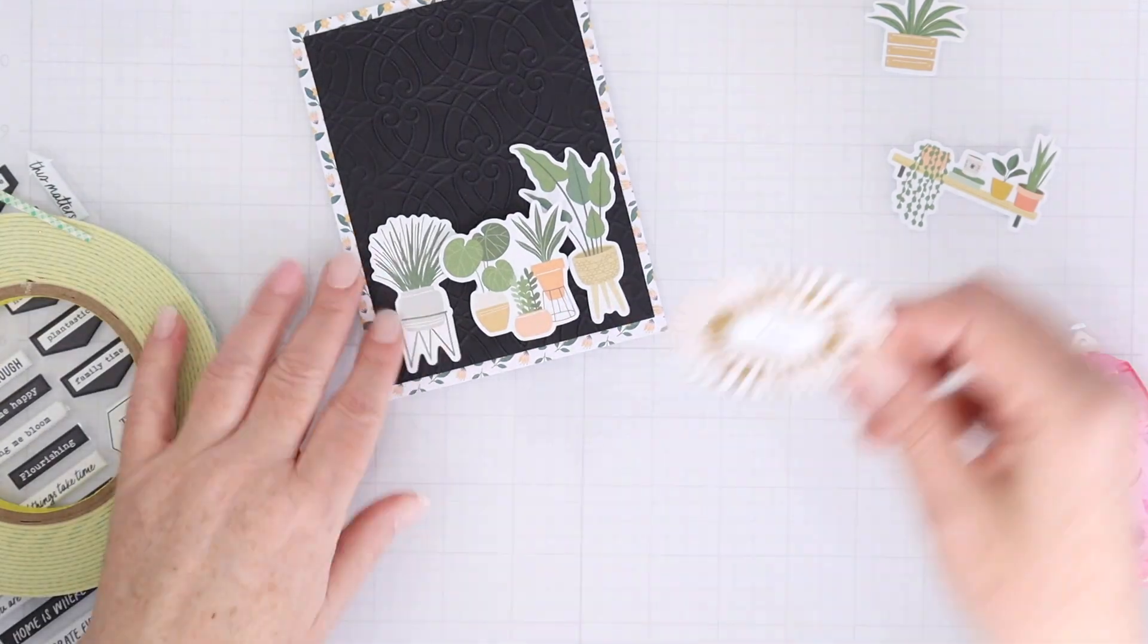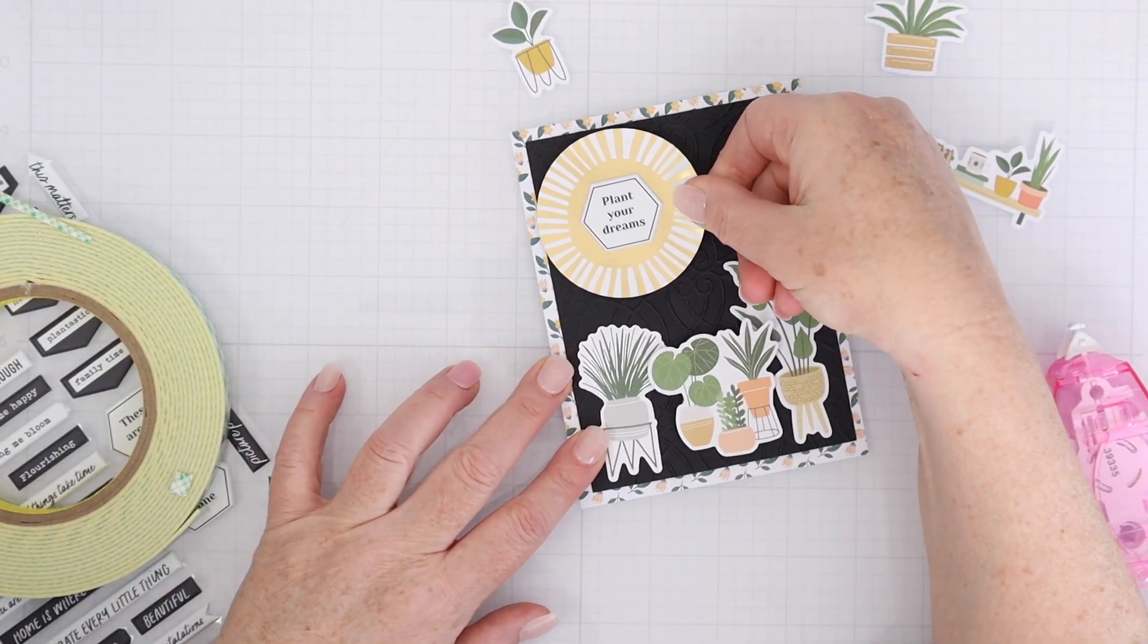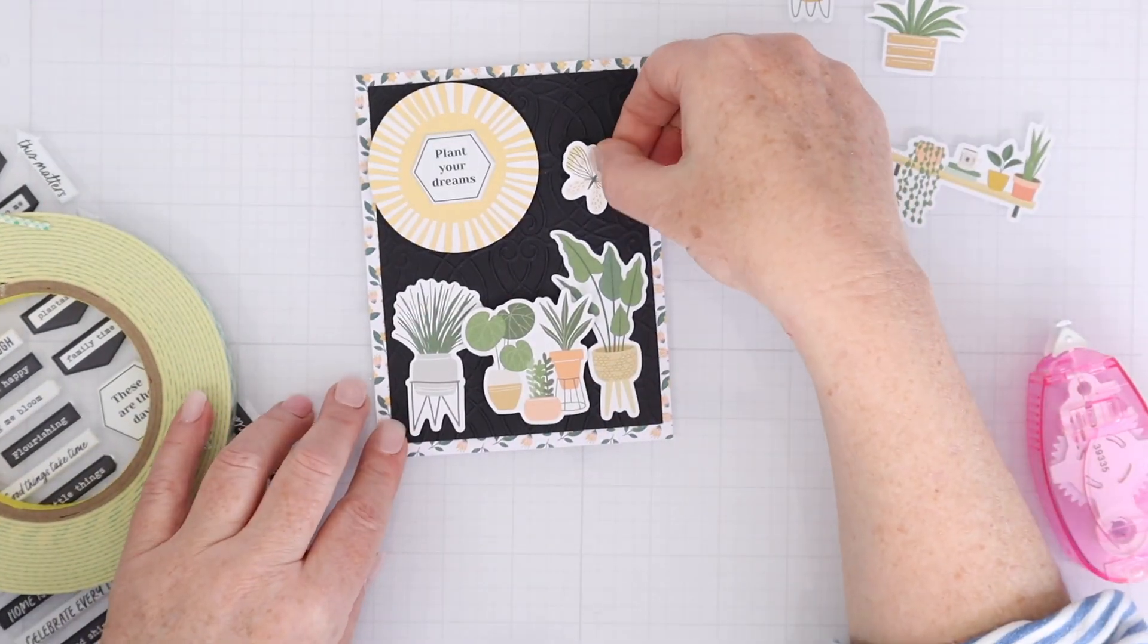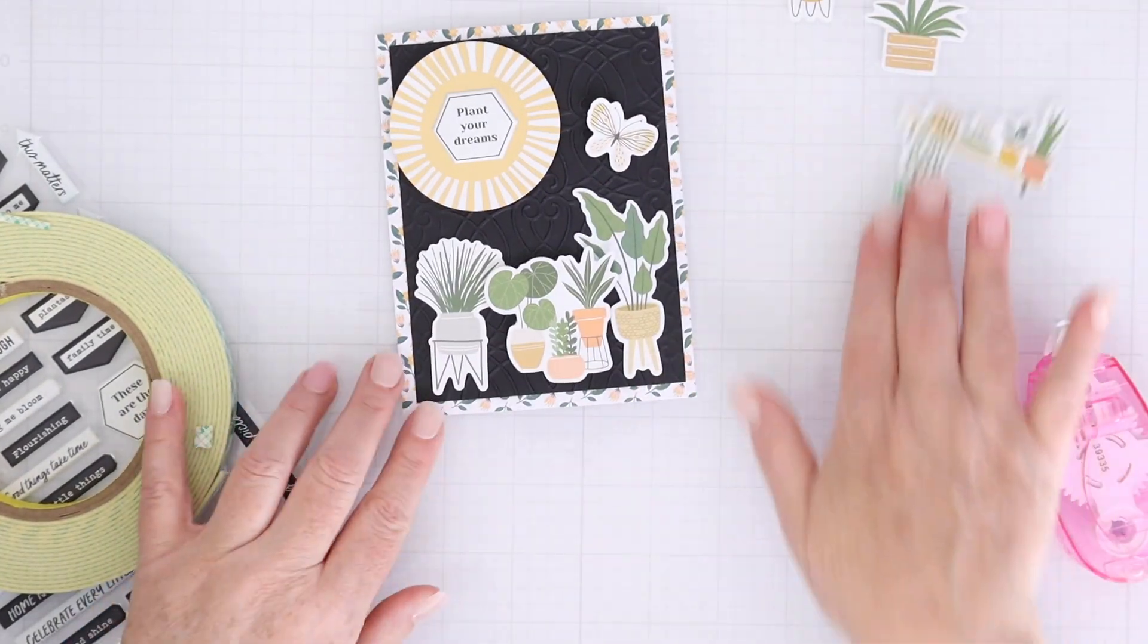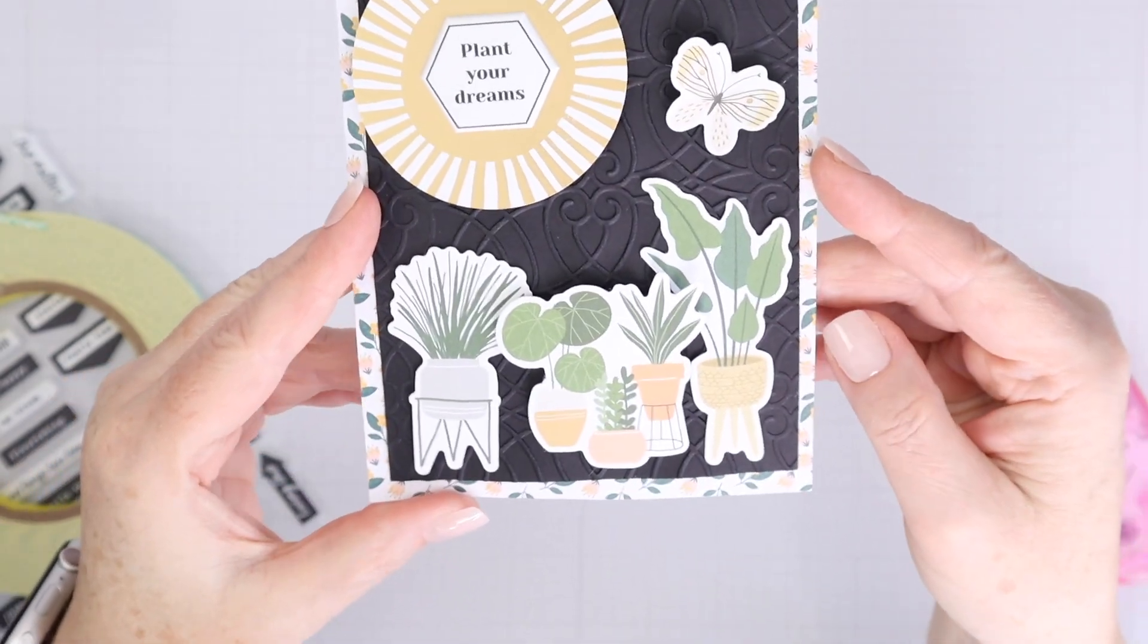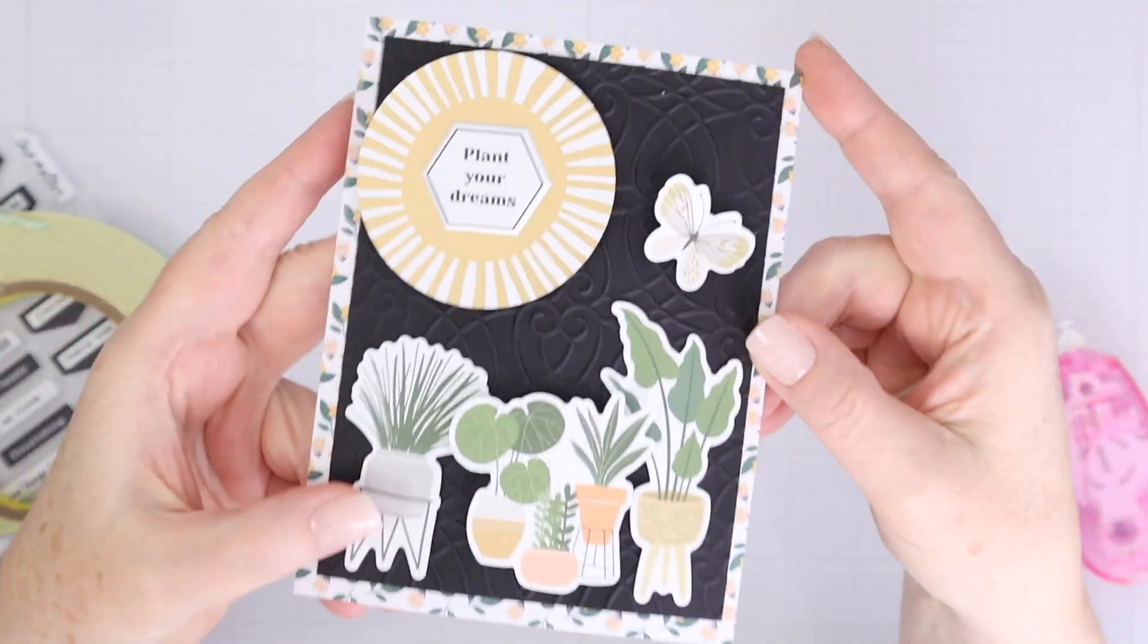So then I'm just going to add some die cuts on top. I almost added too many because you don't really get to see a lot of that pattern. But just to show you that all of these die cuts really just work so well together. And then the puffy sticker that says plant your dreams is right on top of a gold foil cardstock die cut that is a sun.